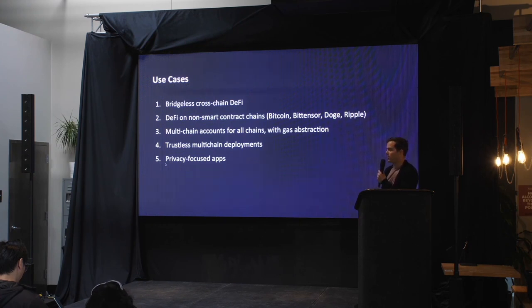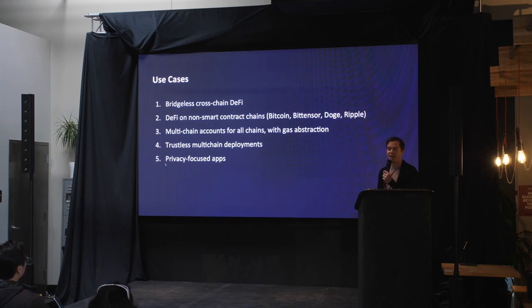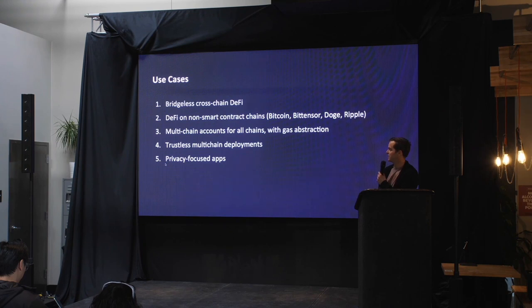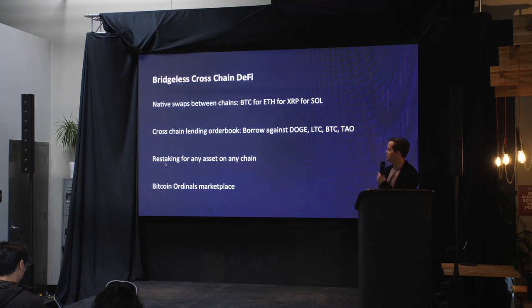Another area that's going to get a lot of attention is multi-chain account abstraction. SWEAT is actually a pretty good example of that — it's basically multi-chain account abstraction — and we'll be showing a lot more of this in the future.